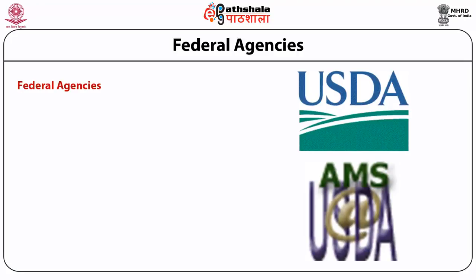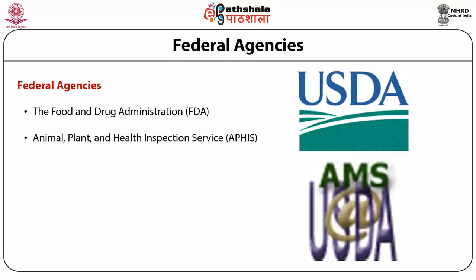Federal agencies involved include the FDA (Food and Drug Administration), which takes care of food coming into the market and checks quality. Next is the Animal, Plant and Health Inspection Service (APHIS), which checks animal and plant foods that come into the market and inspects health hazards regarding foods. Next is the Agricultural Marketing Service (AMS), which checks the quality of cereals and other agricultural foods.